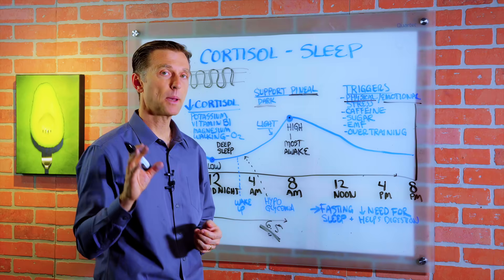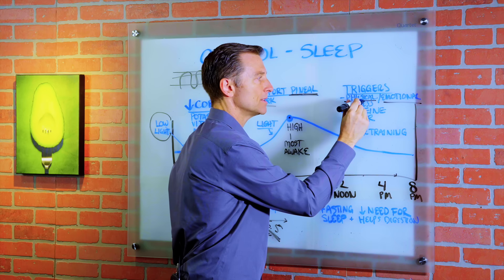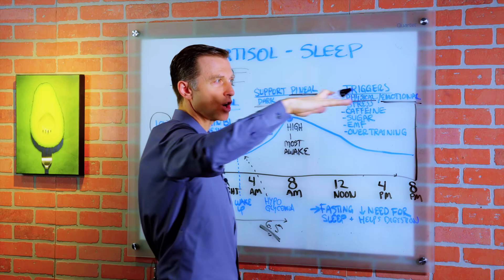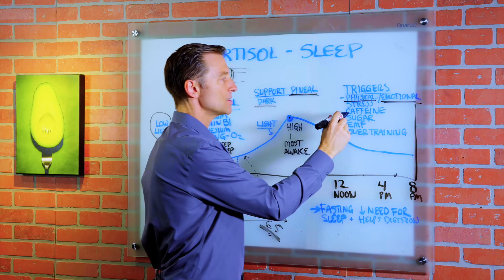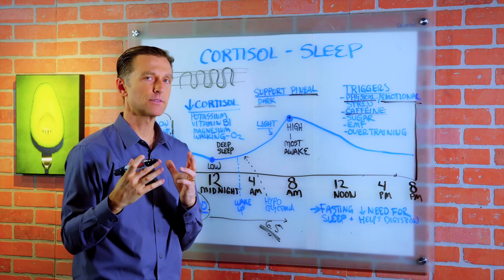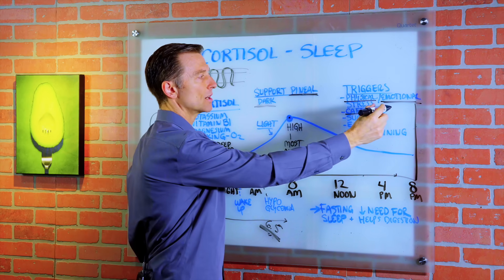So there's certain things that can really mess up your cortisol. Physical stress, trauma, surgeries, emotional stress, losses. So chronic sustained stress over a long period of time can really mess up cortisol. Too much caffeine. In college I drank pots of coffee to stay awake. Eventually, my adrenals start going downhill.